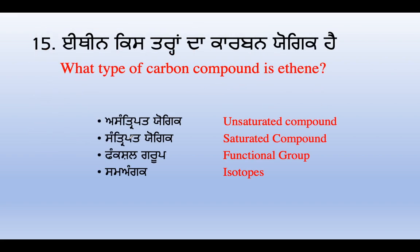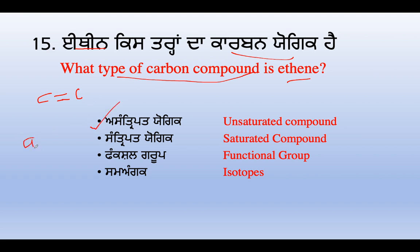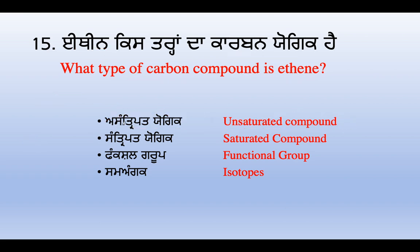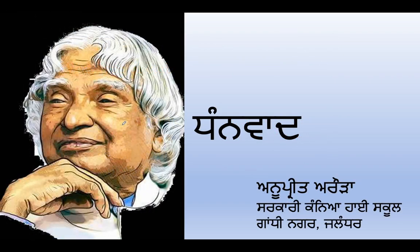Question 14: the molecular formula of propane. Propane has 3 carbons. Adding hydrogens: 1,2,3,4,5,6,7,8 — so propane is C3H8. The options with 3 carbons and 8 hydrogens — C3H8 is the correct answer. Question 15: ethyne — what type of carbon compound is it? Ethyne has a triple bond. When a triple bond is present, it is obviously unsaturated. So option A — unsaturated — is right. That is all 15 questions explained for Carbon and its Compounds, Part 1.